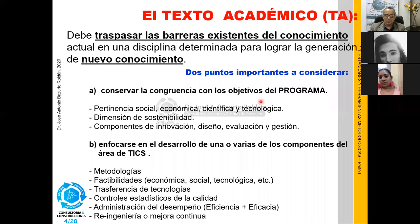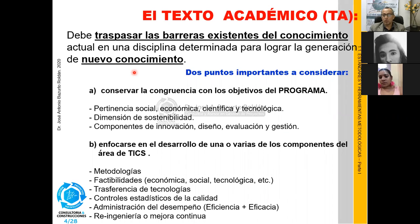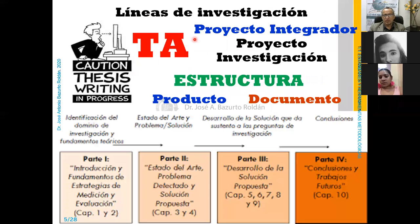¿Qué puntos importantes debo conocer? Primero, saber a qué programa apunta mi objetivo. Segundo, ¿cuál es el área técnica en la que quiero enfocarme? ¿Debo buscar la pertinencia, la dimensión, el contexto, el componente? ¿Lo haré con una metodología, haré una factibilidad, transferencia tecnológica, o una reingeniería para establecer eficiencias sobre el manejo de software o uso de tecnología? Tienen que empezar a crear nuevos conocimientos y ver su línea de investigación.